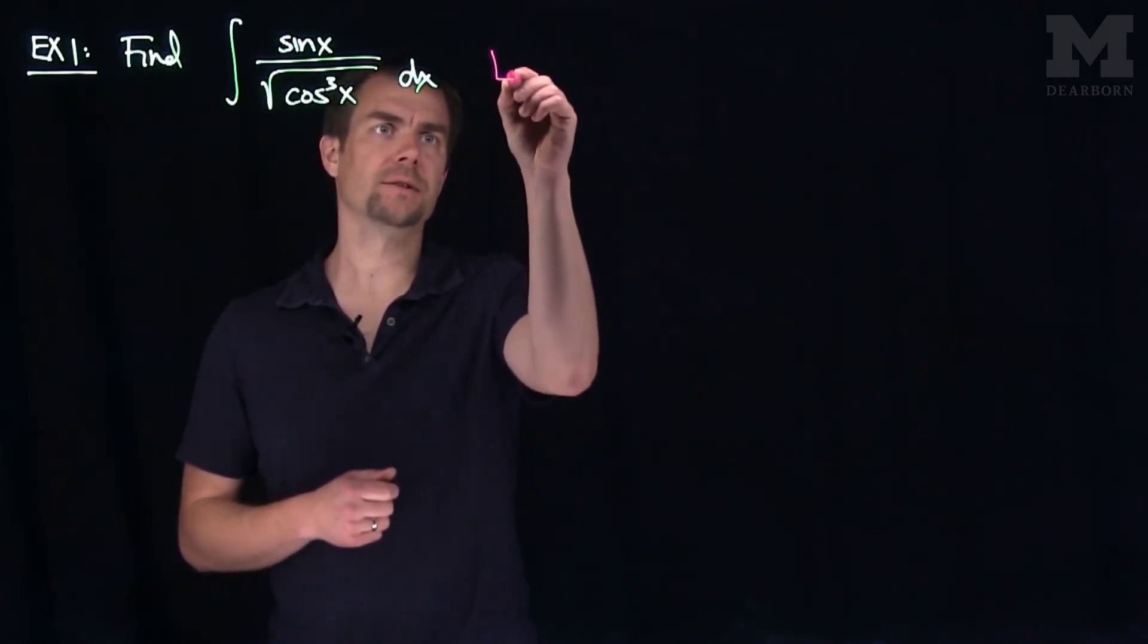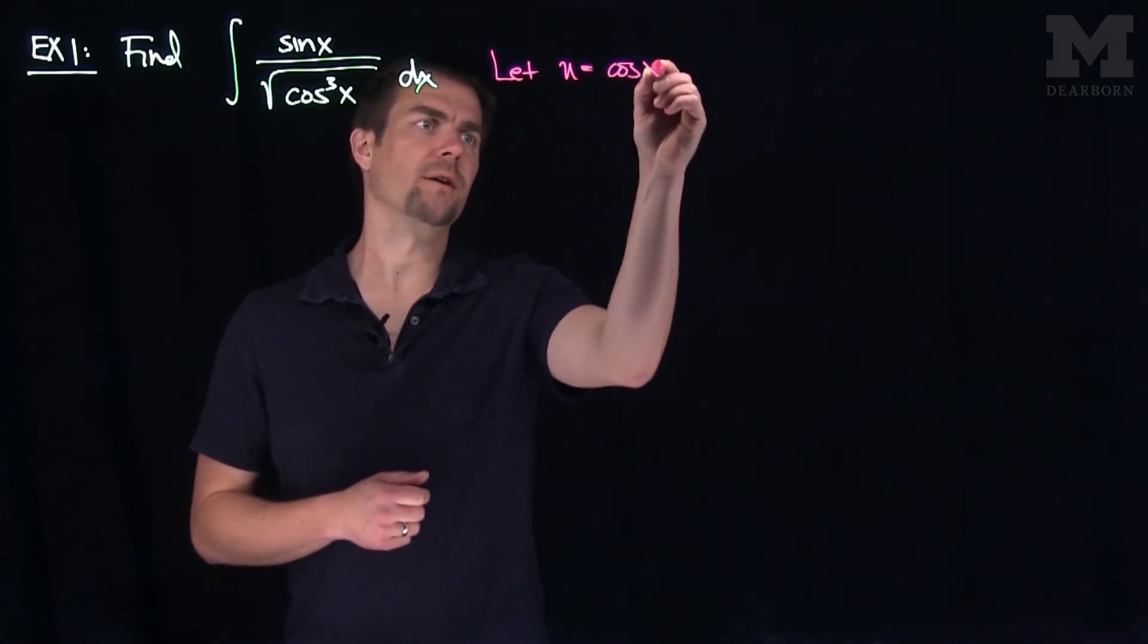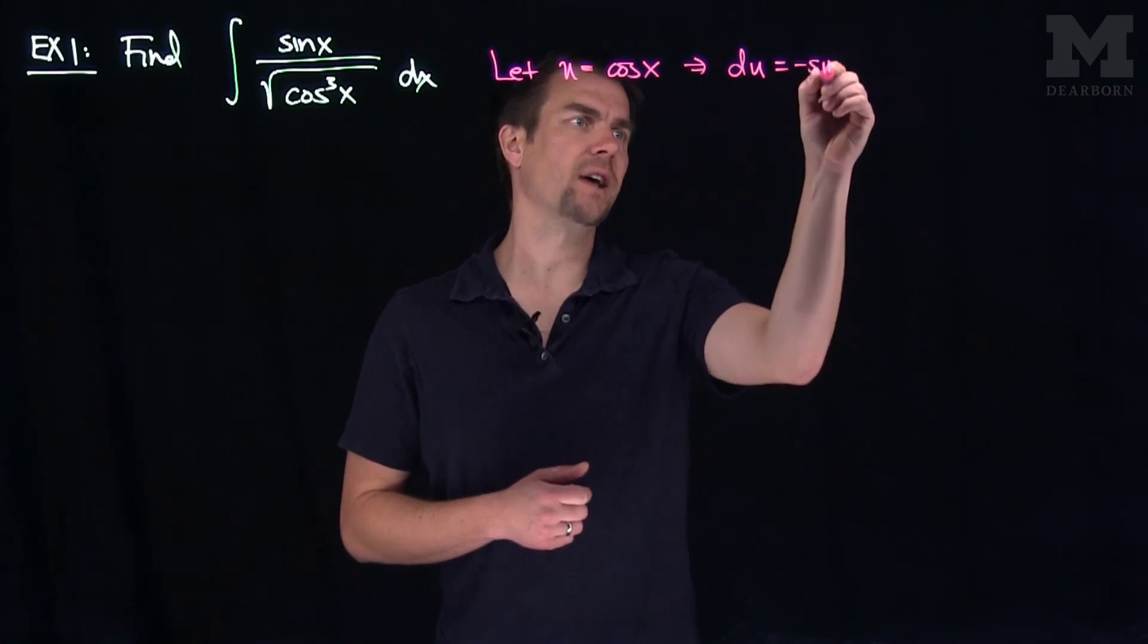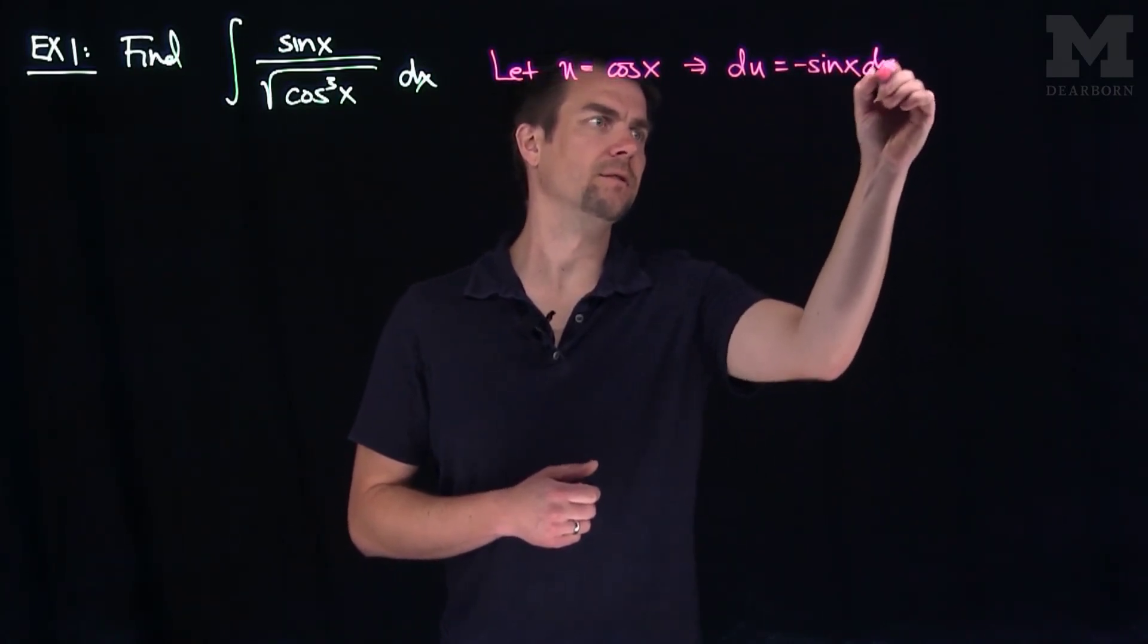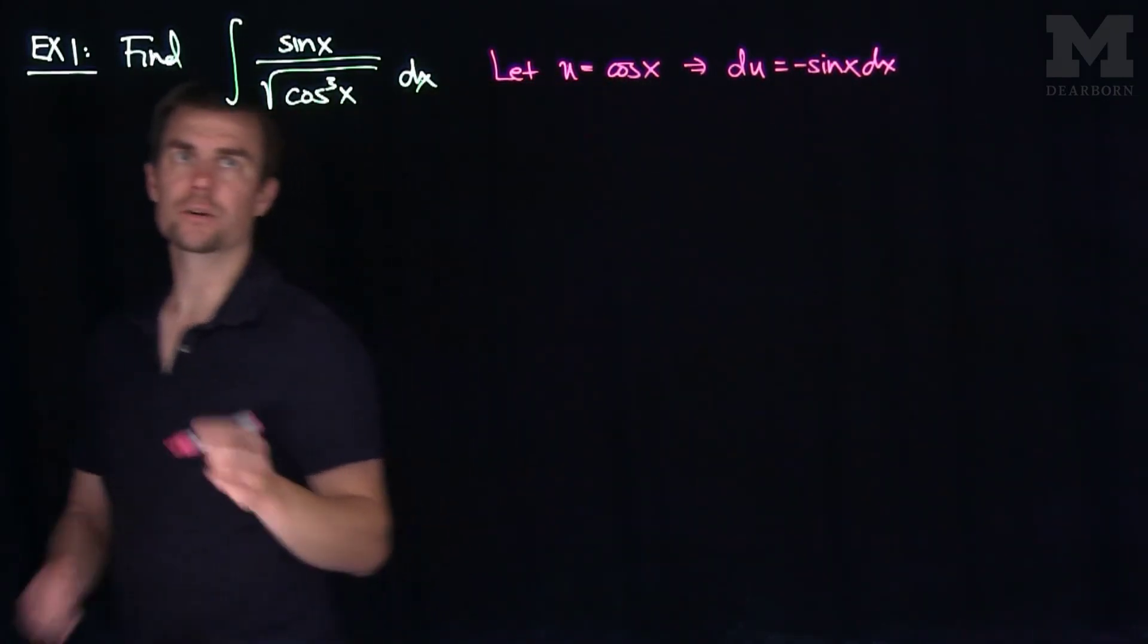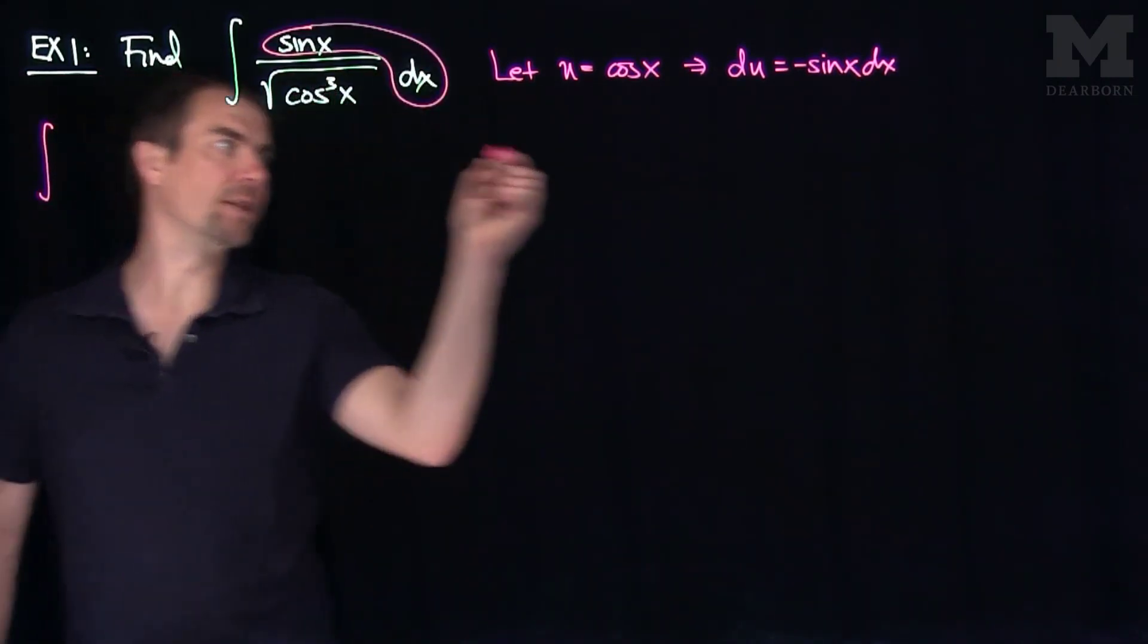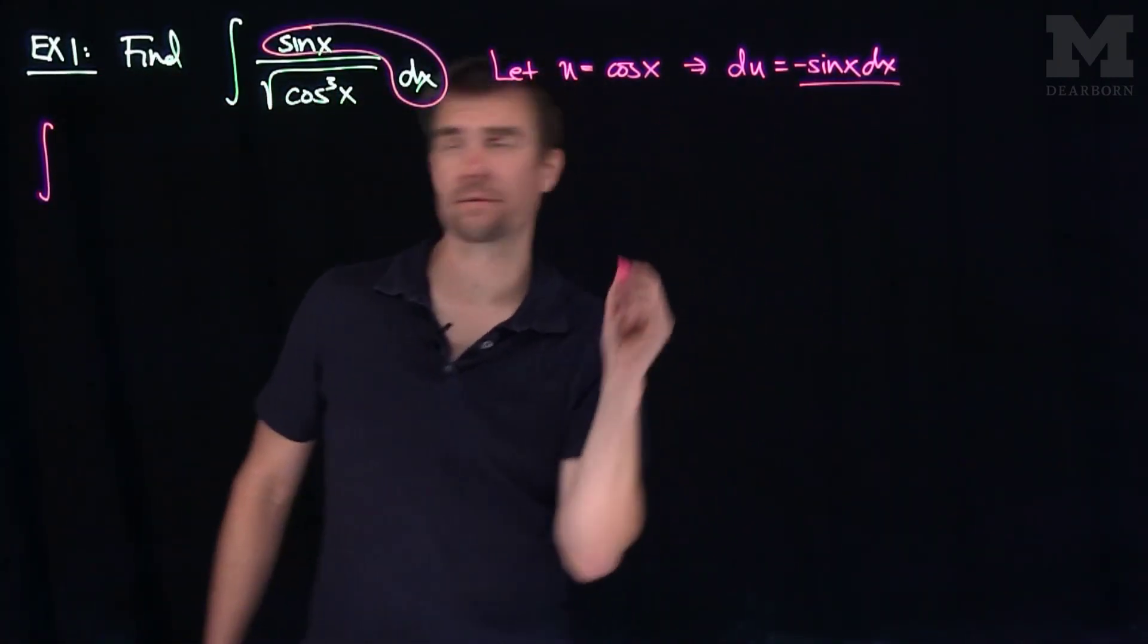So if I let u be cosine of x, then this tells me that du is negative sine of x dx. Now we can change our integral. Our integral becomes the integral, while I have a sine of x dx, that's going to turn into a negative du.